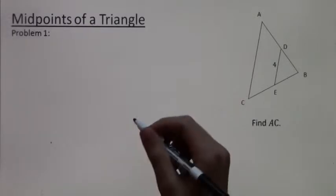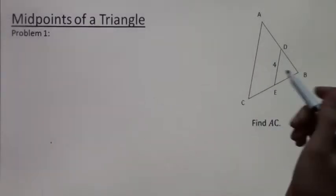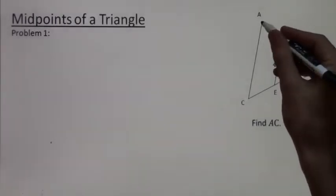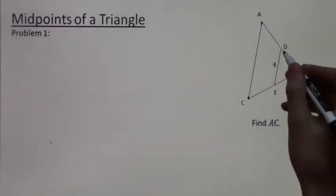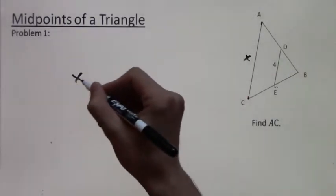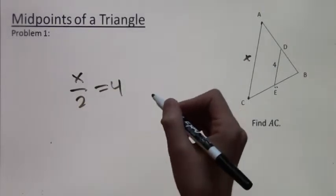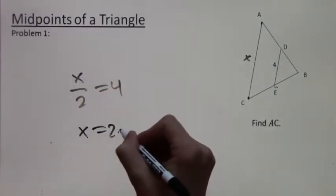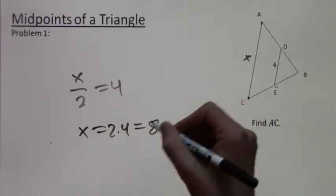So now let's apply this principle to a few examples. Problem one, we are looking for AC. So we don't know AC, so we will label it as X. So now the properties of midpoints tells us that X over 2 is equal to 4. So we just solve for X and we get 8.